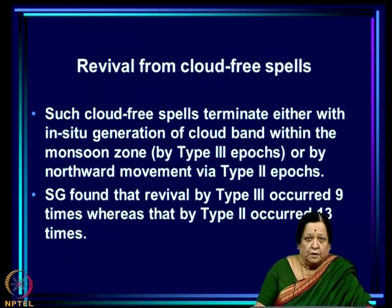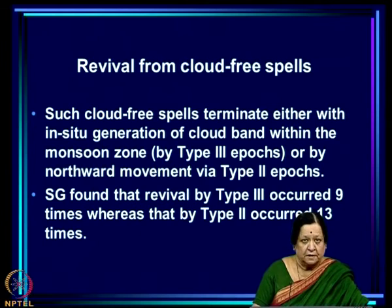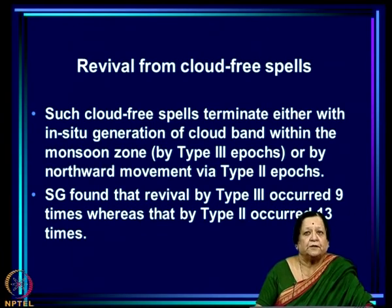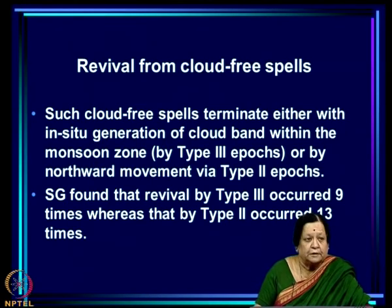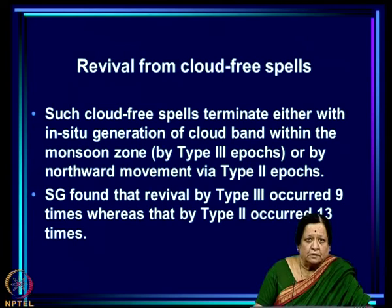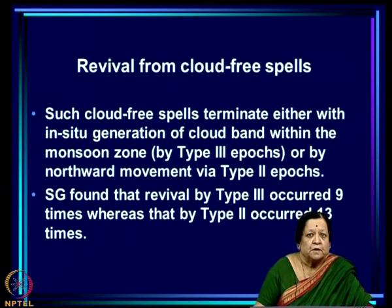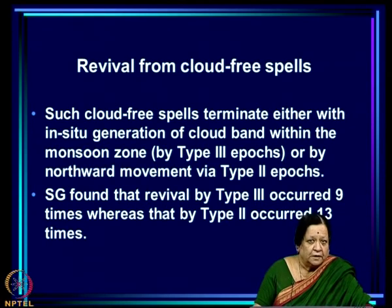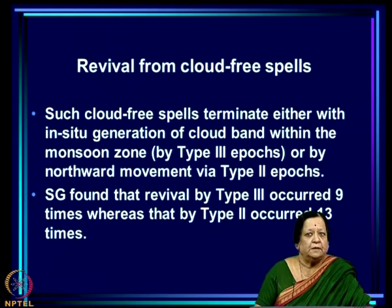The CTCZ revives from cloud-free spells in two ways. Sikha and Gadgil called these: in-situ generation of a cloud band within the monsoon zone — generally over the head Bay — and alternately, revival by northward movement via Type 2 epochs, i.e., genesis over the equatorial Indian Ocean and subsequent northward movement. SG found revival by Type 3 occurred in 9 cases whereas Type 2 occurred in 13 cases, so the two numbers are comparable.